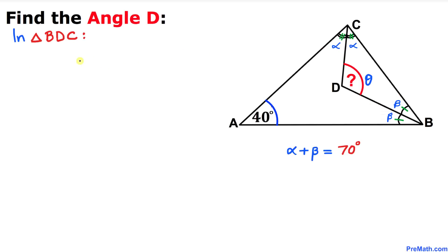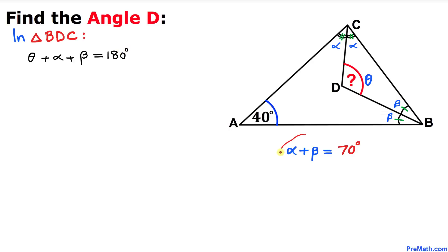Now let's focus on triangle BDC. The sum of all three angles must also be 180 degrees. Those angles are theta, alpha, and beta, so we write: theta plus alpha plus beta equals 180 degrees. We already know that alpha plus beta equals 70 degrees, so we substitute that in.